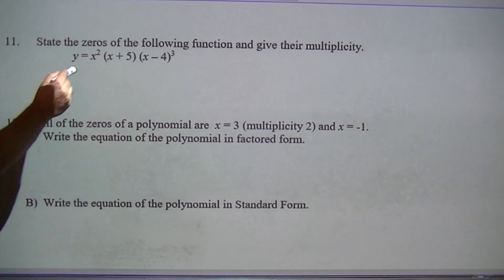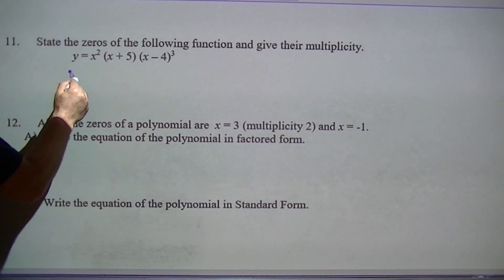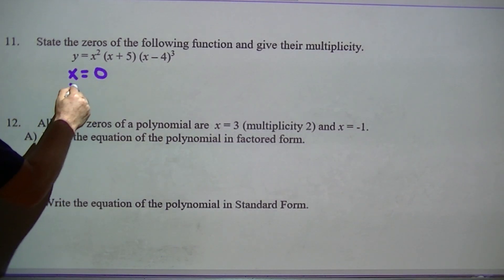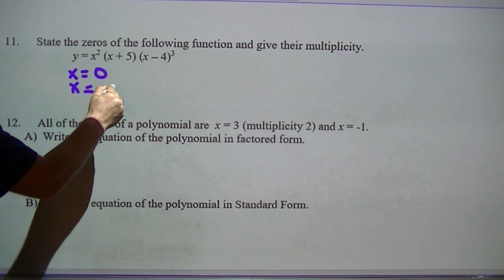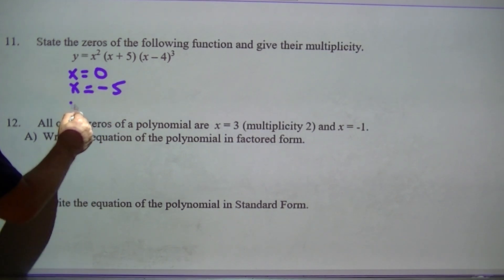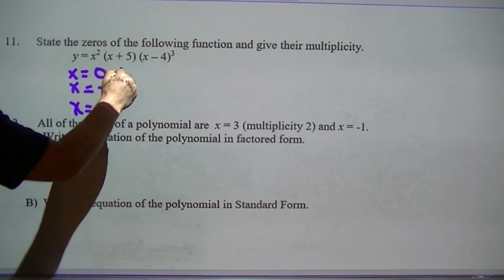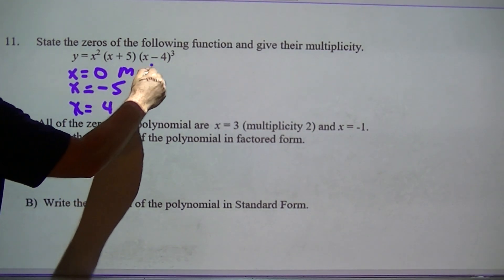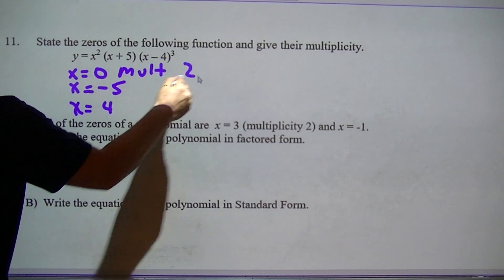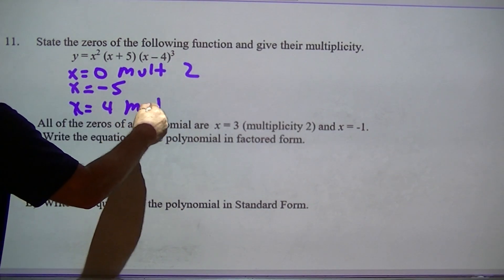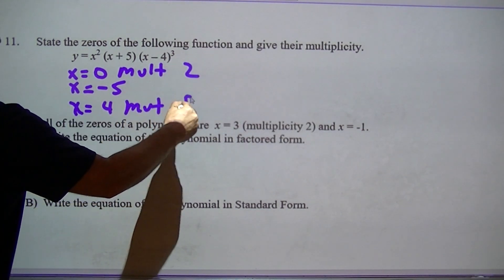State the zeros and their multiplicity. That would be x equals 0, x equals negative 5, and x equals 4. x equals 0 would be a multiplicity of 2. x equals negative 5 would not have a multiplicity noted. x equals 4 would have a multiplicity of 3.